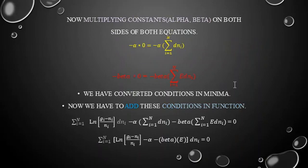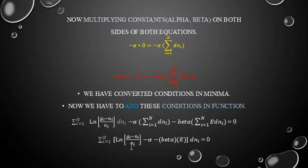Multiplying α on the first condition gives α·Σdnᵢ = 0, and β on the second gives β·Σεᵢdnᵢ = 0. We now add these conditions — with constants α and β — into our original function. Combining everything and setting equal to zero gives: Σ [ln((gᵢ - nᵢ)/nᵢ) - α - β·εᵢ] dnᵢ = 0.